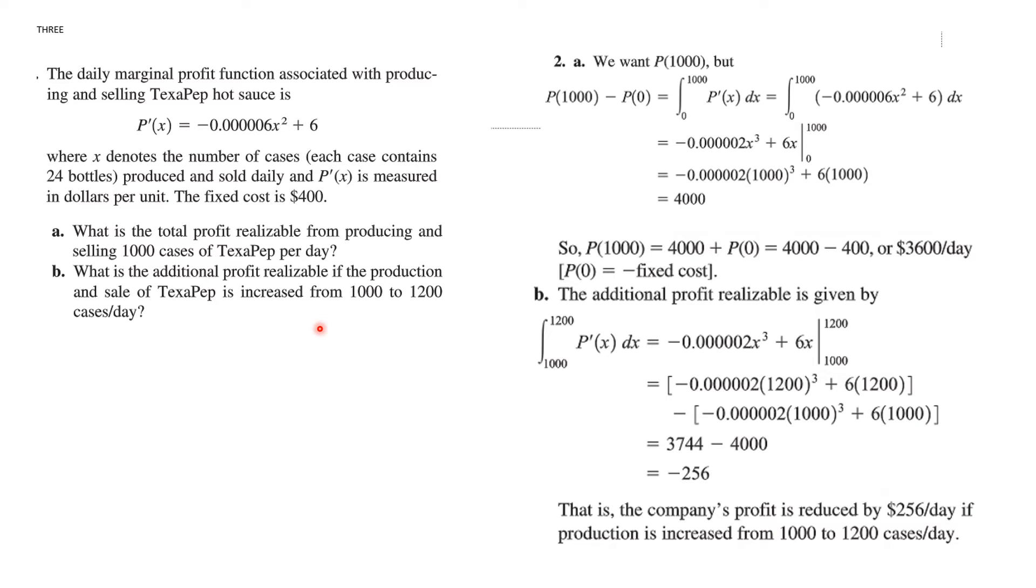But then it asks, what additional profit is realized if you increase from 1,000 to 1,200? Well, that, by the net change theorem, is going to be the integral from 1,000 to 1,200. We've already found the antiderivative, so we're plugging in those values. We use the fundamental theorem of calculus, and we find that we will lose $256 in profit. That is, the company's profit is reduced by $256 per day if they increase production.